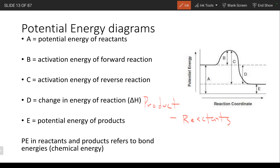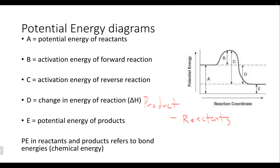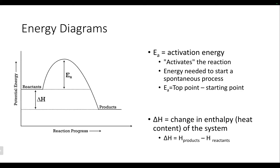If you think back to the thermite video from the first section of this chapter, the reaction started because they put a sparkler in the flower pot. If they just mixed the aluminum powder and the iron(III) oxide powder together, a reaction wouldn't occur because it didn't have enough energy to get over this activation energy — this energy barrier. That's why they had to add the sparkler to give it that extra boost to get the reaction actually going. The activation energy is the energy needed to activate the reaction — the energy needed to get it going.